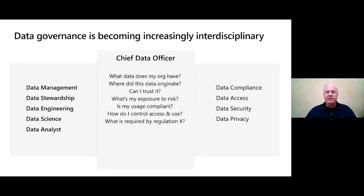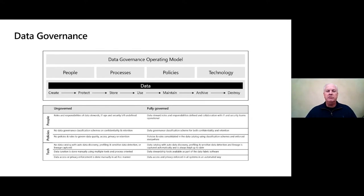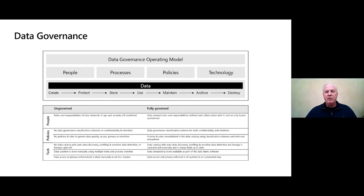Taking all of this into consideration, we look at the data governance operating model — there are people, processes, policies, and technology — and we need to understand how we create, protect, store, use, maintain, archive, and eventually destroy information. We understand where each of our customers is in their journey from completely ungoverned to fully governed, and we want to help you build out those things by understanding your people, the policies you're driving, and the technology that supports them.